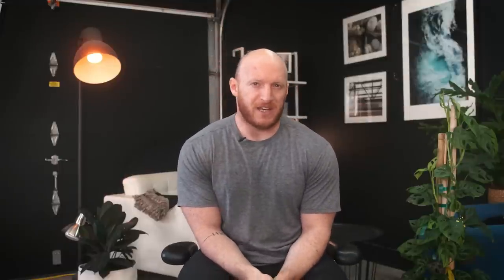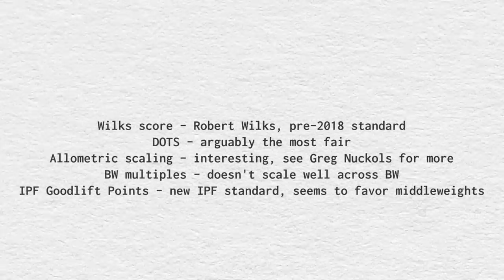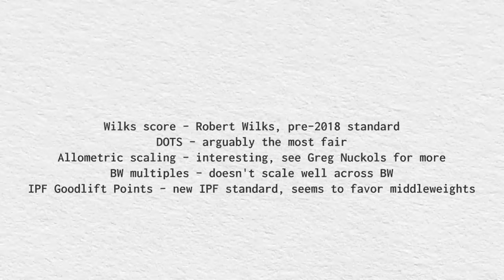Likewise, advanced athletes come in all shapes and sizes. What we're looking at isn't black and white — we should view most training concepts as probabilities, as gradients. Beginners tend to have lower training ages and lower relative strength compared to their body weight. There are quite a few ways to measure relative strength: Wilks score, the newer Dots coefficient, allometric scaling, IPL good lift points, or even multiples of your body weight lifted — like a two-times bodyweight deadlift or a six-times bodyweight total.